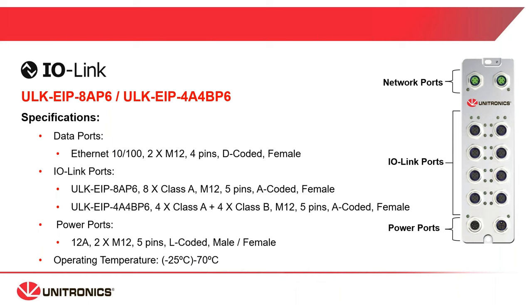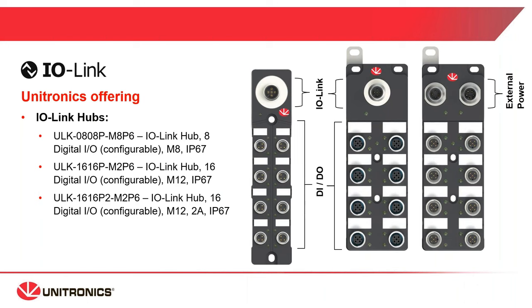For the eight IO-Link port master, it's the same connectivity method. Just keep in mind that in the 4A 4B P6 model, the lower four IO-Link ports are class B. Here you can see the digital IO hubs. Hubs are different from the master — they are simple digital IO manifolds that connect to the master ports using the IO-Link ports on the top.